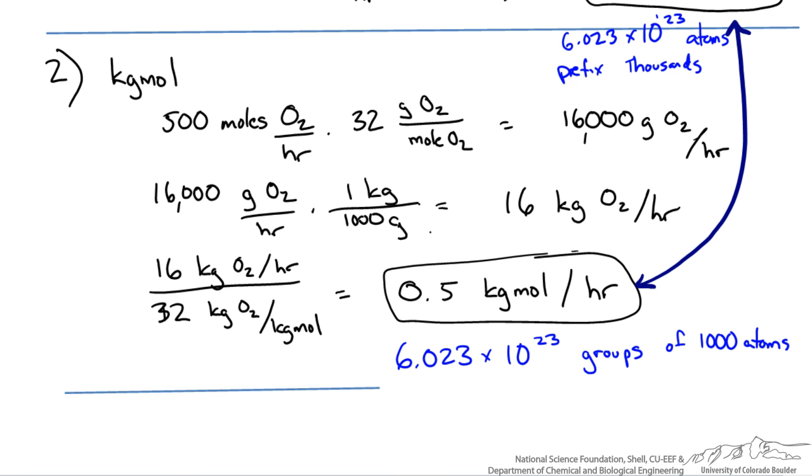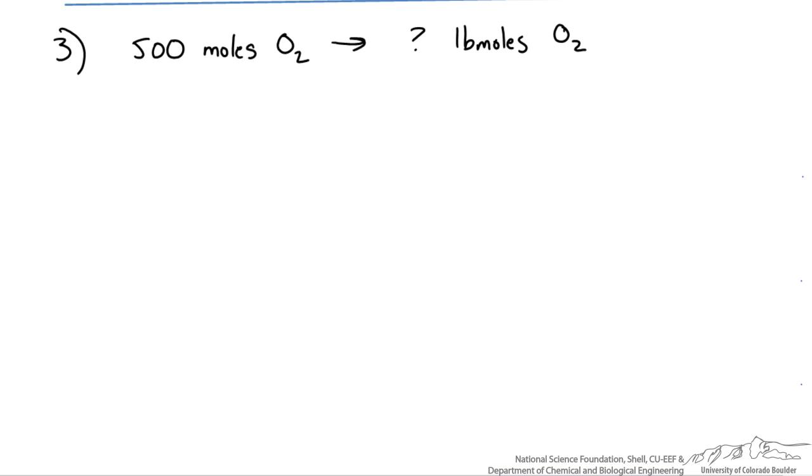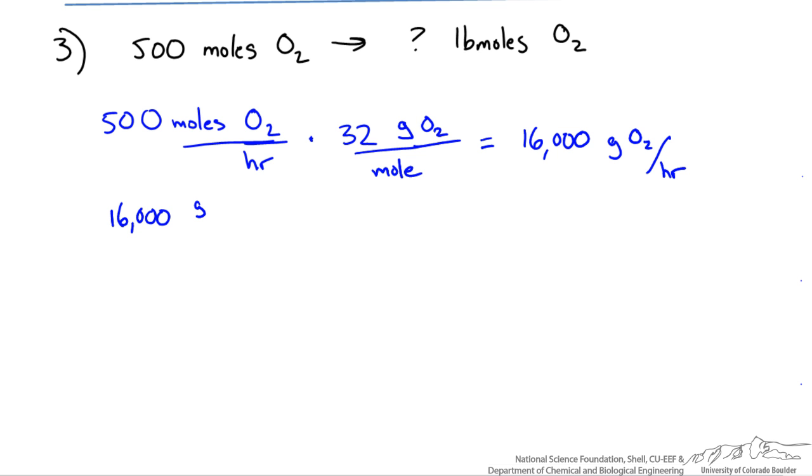So the last conversion we're going to do is to convert to pound moles. So we want to know 500 moles of oxygen, how many pound moles of oxygen do we have flowing per hour. So let's use the same long route we did before, where we take 500 moles of oxygen per hour, multiply it by our conversion factor of 32 grams of oxygen per mole of oxygen, and we get 16,000 grams of oxygen per hour. Now we take that 16,000 grams and convert it to pounds, using a conversion factor of 454 grams per one pound mass. This gives us 35.24 pounds of oxygen per hour.